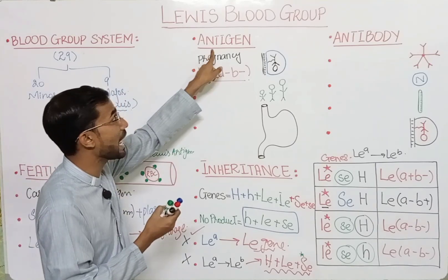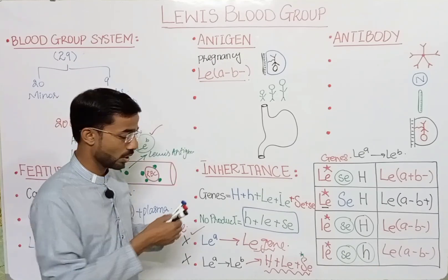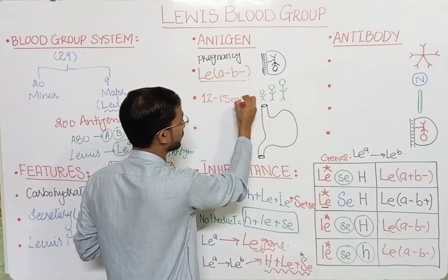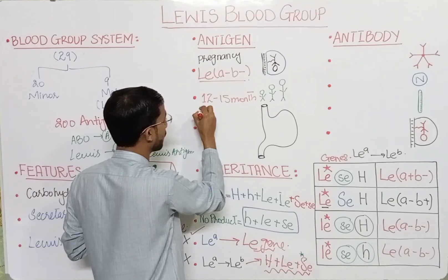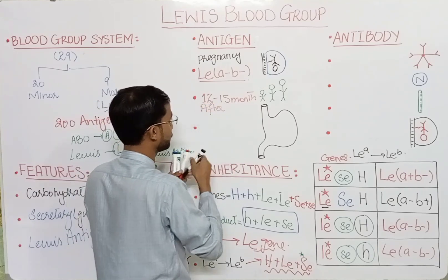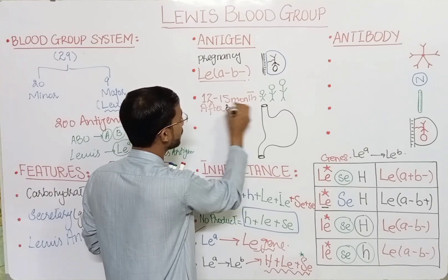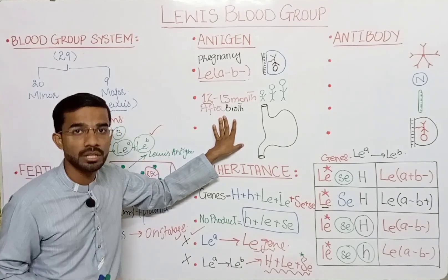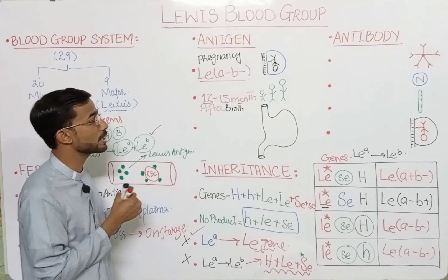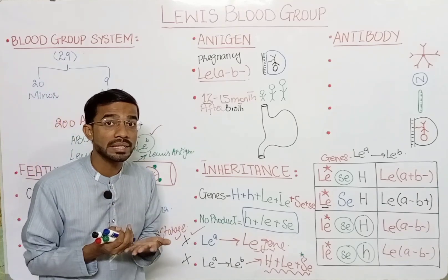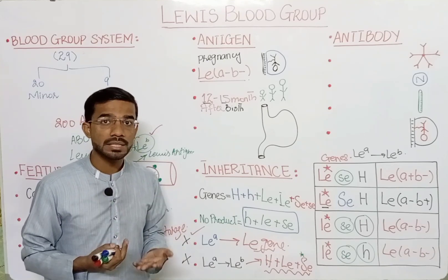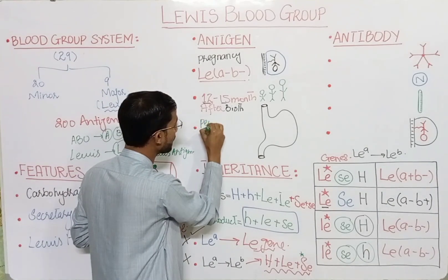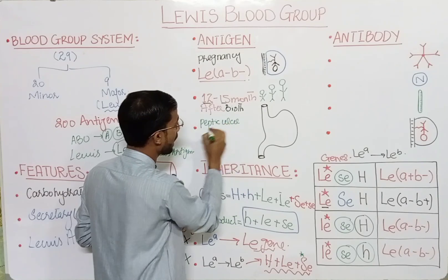Regarding when Lewis antigen will be expressed in the body: it develops 12 to 15 months after birth. Between 12 to 15 months after birth, you will see the development and expression of the LEb antigen. The LEb antigen is also involved in the development of peptic ulcer and stomach cancer.